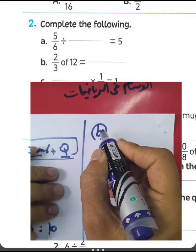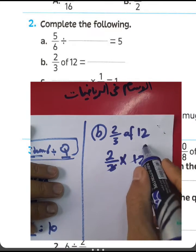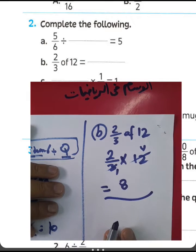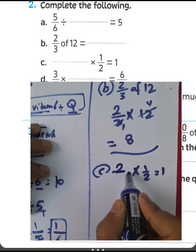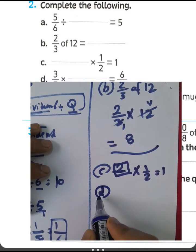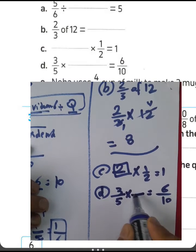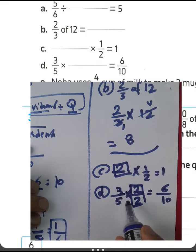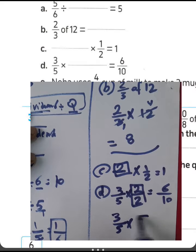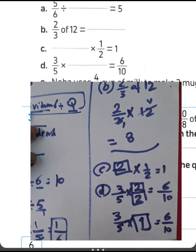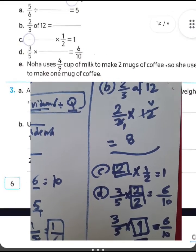For question letter P, 2/3 of 12 means the product between them. So 12 divided by 3 equals 4, and 2 times 4 equals 8. For letter C, space times 1/2 equals 1, so the answer is 2. For letter D, 3/5 times space equals 6/10. Since 3 times 2 equals 6 and 5 times 2 equals 10, the answer is 2/2 — or simply 1, making 3/5 equivalent to 6/10.